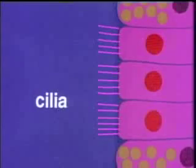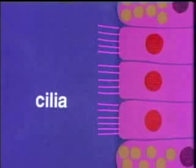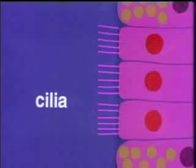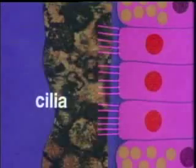Air flowing down the trachea passes over cilia, epithelial cells with tiny hairs that wave about 20 times per second. These sweep more particles out of the air and trap them in a layer of sticky mucus that coats the trachea's walls.